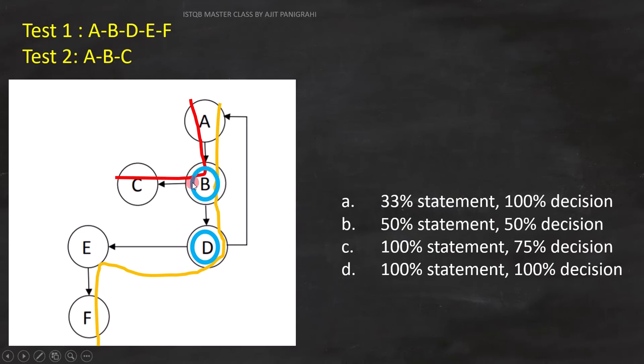Here outcome B to C is covered. And outcome B to D is covered. That means both the conditions are covered.